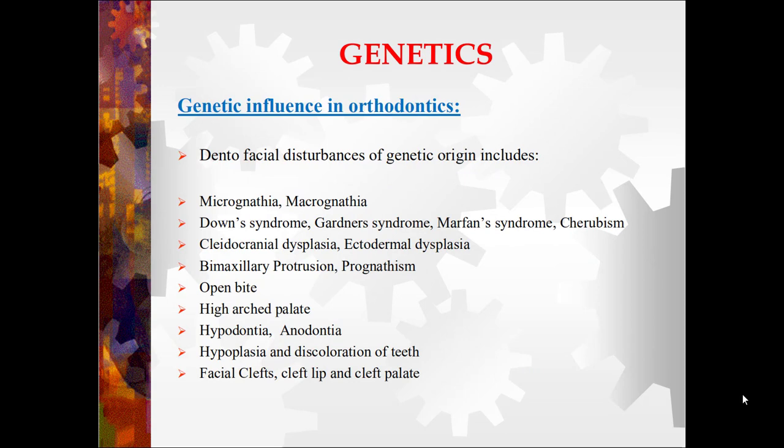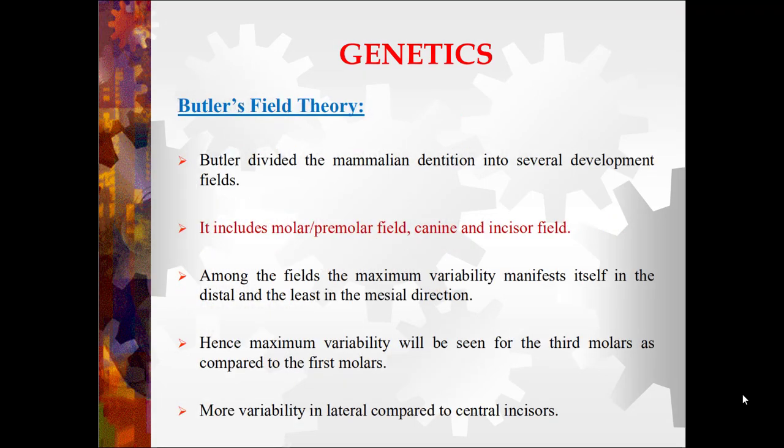Regarding genetic influence in orthodontics, there is a list of dentofacial disturbances of genetic origin. Coming to Butler's field theory: Butler divided the mammalian dentition into several developmental fields, including the molar-premolar field, and the canine and incisor field. Among the fields, maximum variability manifests in the distal direction and least in the mesial direction — that is, the further the region, the greater the variability. That is why the third molar shows maximum variation in size and shape of crown as well as size and number of roots. Even comparing the lateral incisor with the central incisor, the lateral incisor shows more variability as it is further from the midline. The summary: a tooth more distantly placed from the midline will show maximum variation.